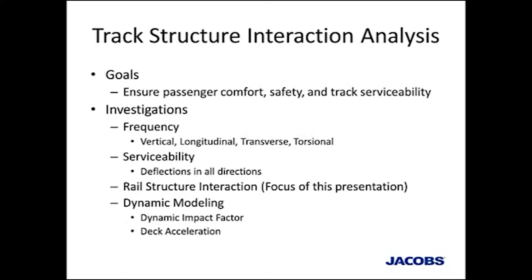Finally, we have the two key ones. First is dynamic analysis — this deserves its own presentation. It basically runs a simulated high-speed train over the bridge using a time history impulse function based on wheel and node interaction. In MIDAS, the data generator pull-down under Tools has a nice function to help generate those time history functions. The idea is to capture an accurate dynamic impact factor, which for high-speed trains can be upwards of 100%. We also want to calculate deck acceleration to limit unsafe wheel contact — basically the deck springing up and colliding with a passing wheel. But today we're going to focus on rail structure interaction.